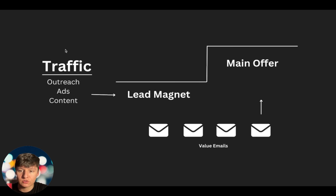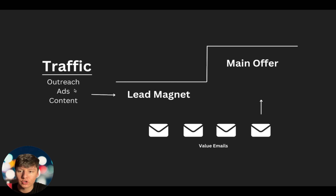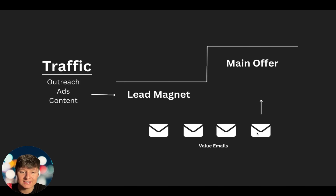Here's what the full system looks like: you have your traffic source — whether it's outreach, running ads, or posting content on social media — all driving traffic to your lead magnet. After a lead opts in, they start receiving a sequence of value emails, and the whole goal of those emails is to eventually get those leads to buy your main offer. I hope you enjoyed this video. If you have any questions, let me know down below, don't forget to subscribe, and I'll see you in the next one.